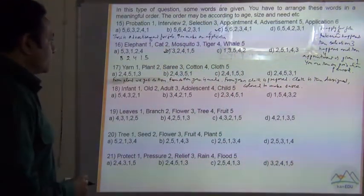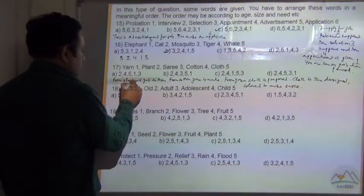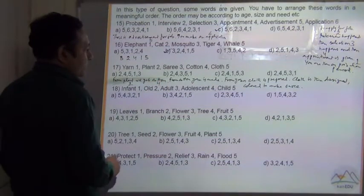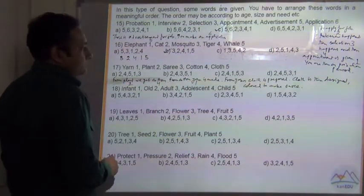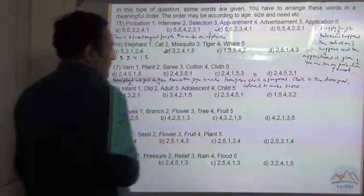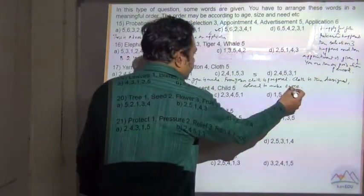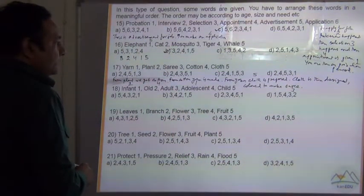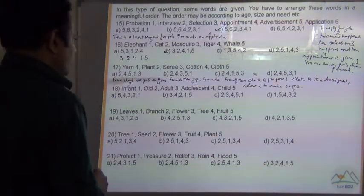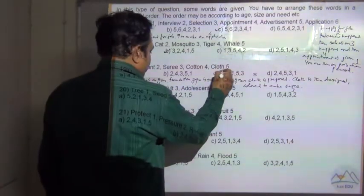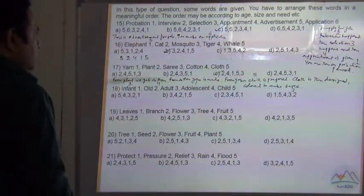So what is the sequence? Plant is your 2, then we get cotton 4, then yarn 1, then cloth 5, and then we have saree 3. So sequence is 2, 4, 1, 5, 3. Your answer is C.